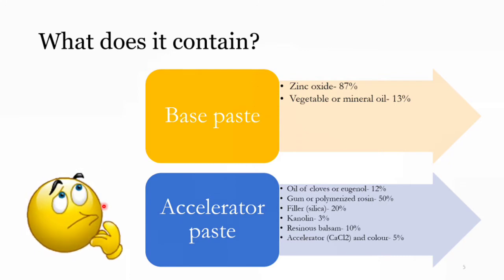The composition consists of a two-paste system: base paste and accelerator or catalyst paste. The base paste contains zinc oxide, which is the major component at about 87%, and vegetable or mineral oil. The zinc oxide should be finely divided and contain very small amounts of water, as more water may cause premature setting. The vegetable or mineral oil comprises about 13% and acts as a plasticizer to improve flow and reduce viscosity. It also helps mask the tissue irritative effect of eugenol.